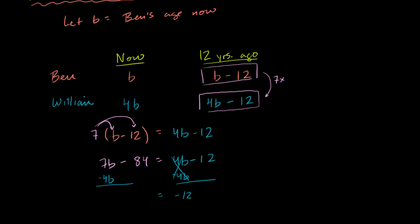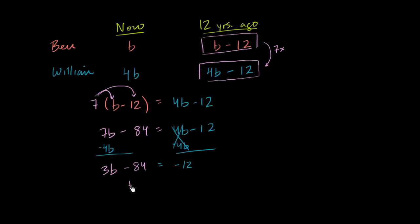On the right hand side I have a negative twelve. On the left hand side, I'm left with 7b minus 4b is 3b. And then I still have a minus eighty-four. Well I want to get rid of this negative eighty-four on the left hand side.